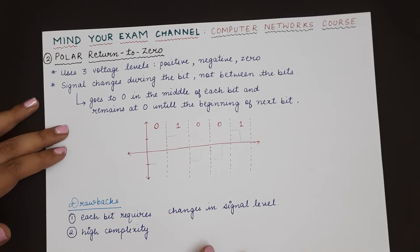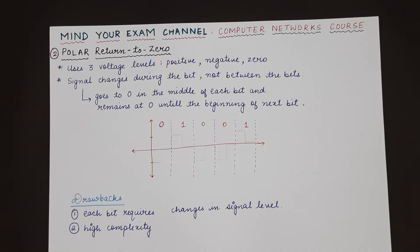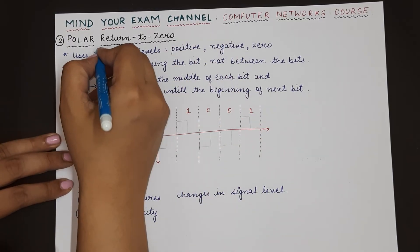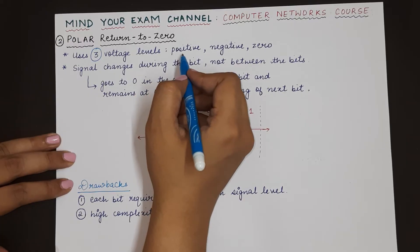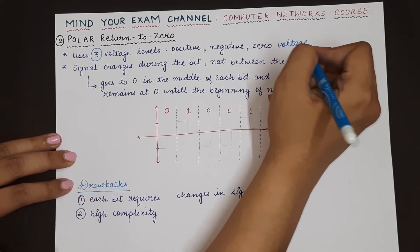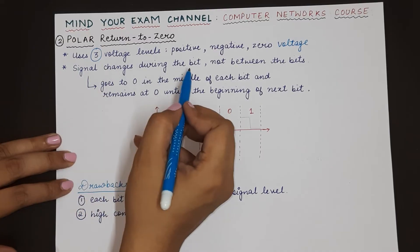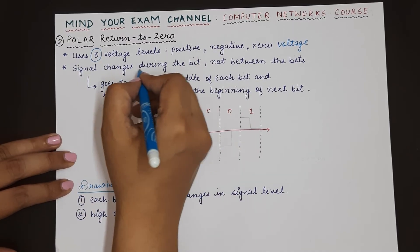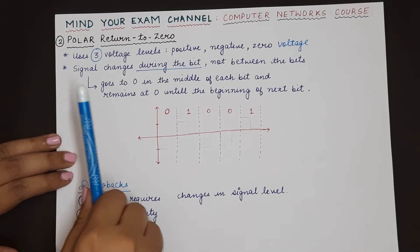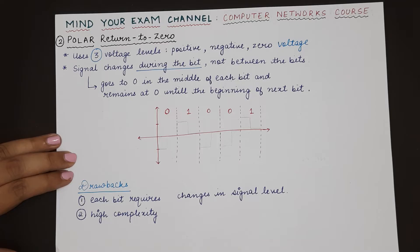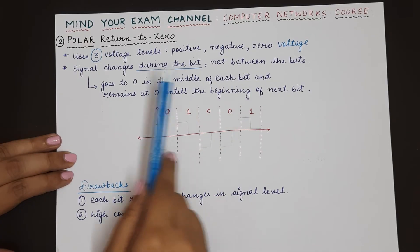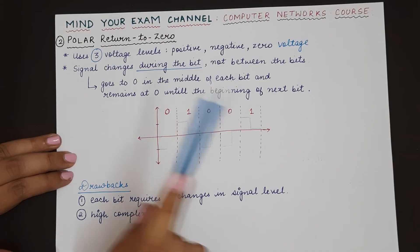The second version of polar line coding is polar RZ — polar return to zero. Polar RZ uses three voltage levels: plus V (positive voltage), negative voltage, and 0 voltage. The signal returns to 0 in between the bit. In non-return to zero schemes, whether unipolar or polar, the signal changed after one bit was over and before the next bit started. But in polar RZ, each bit sees a change in the signal level during the bit itself.